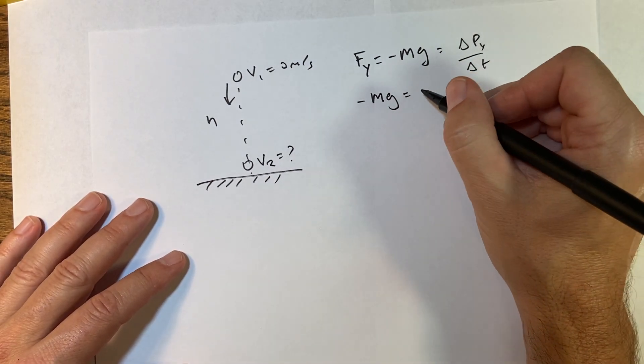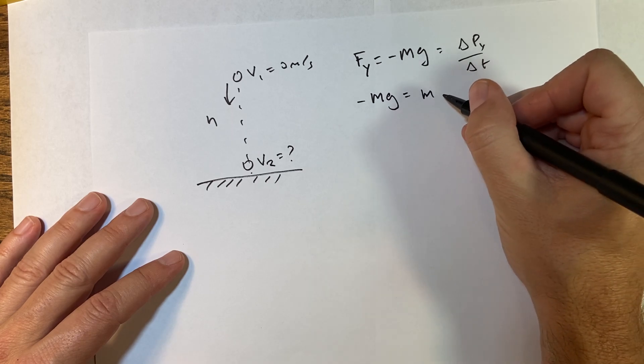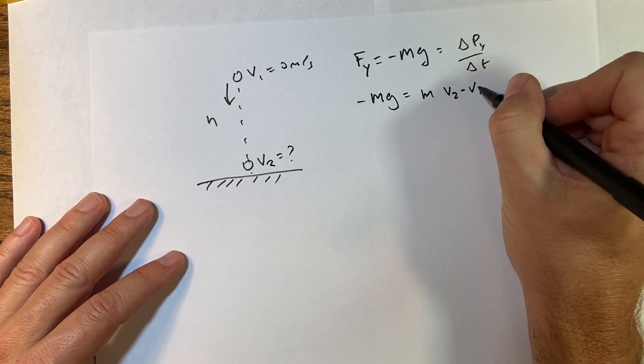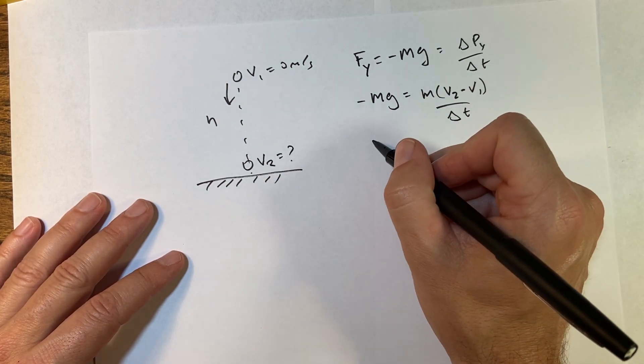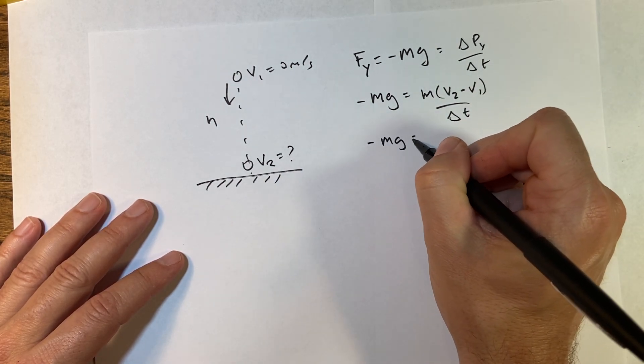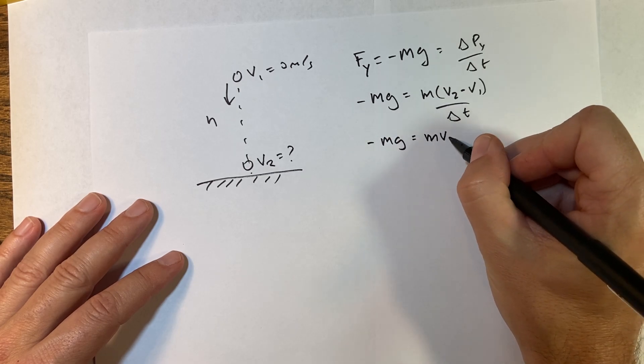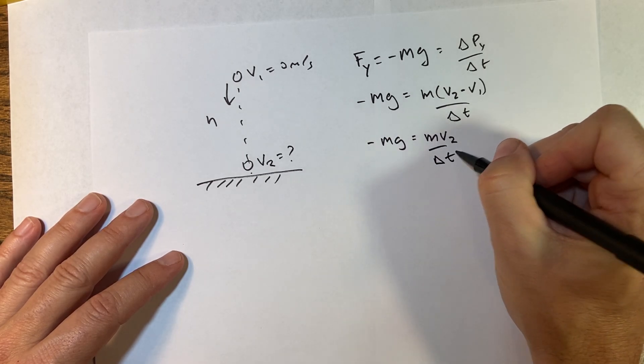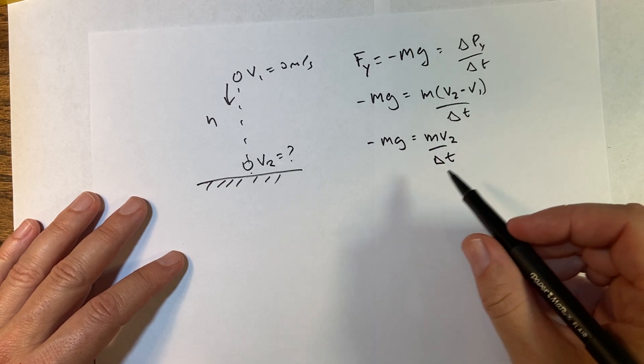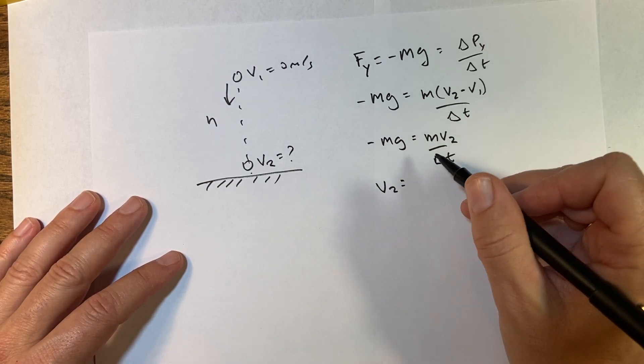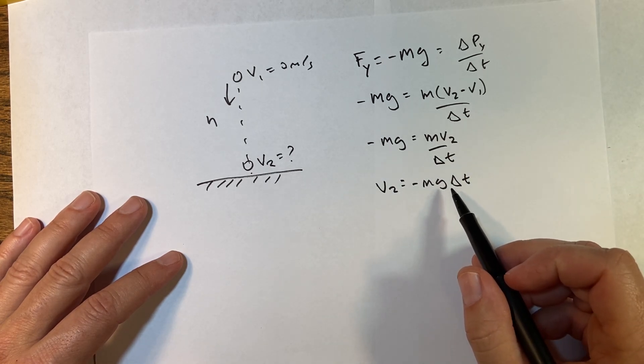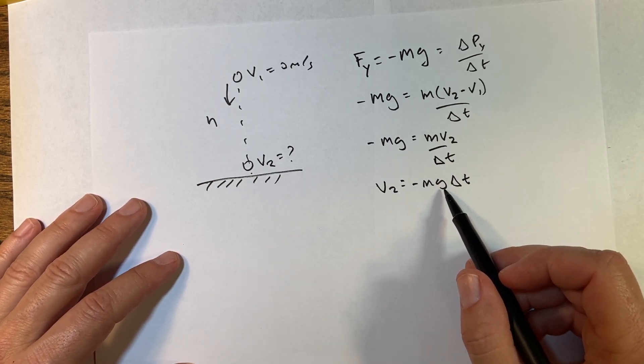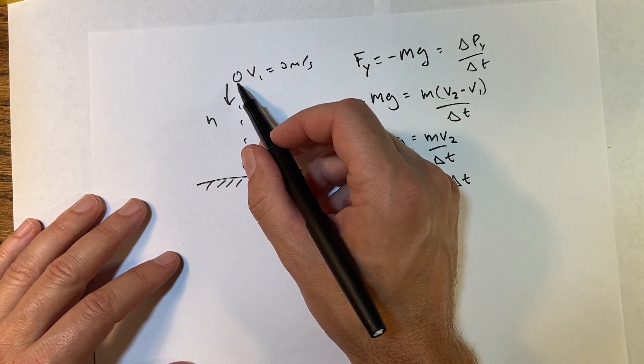This is going to find—so this is going to be m v2 minus v1 over delta t. And I know that v1 is zero, so I get negative mg equals m v2 over delta t. So I could solve this for v2: v2 is going to be equal to negative mg delta t. But I don't know time. Okay, so but I actually know a trick.